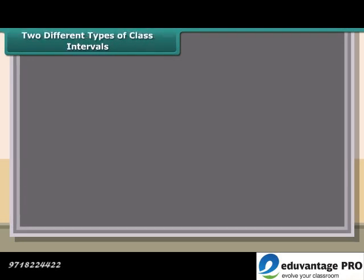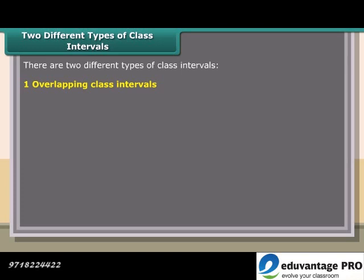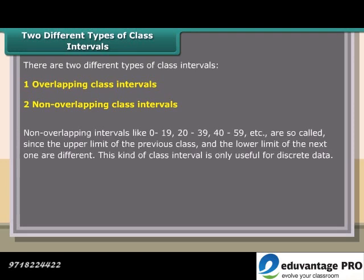Two different types of class intervals: Overlapping class intervals and Non-overlapping class intervals. Non-overlapping intervals like 0 to 19, 20 to 39, 40 to 59, etc. are so-called since the upper limit of the previous class and the lower limit of the next one are different. This kind of class interval is only useful for discrete data.